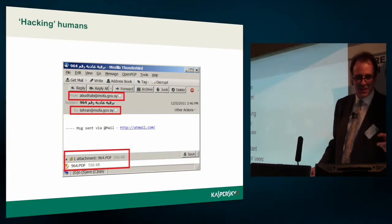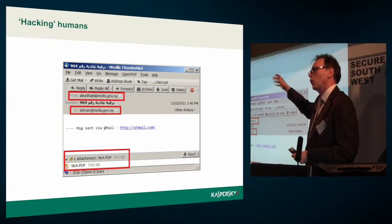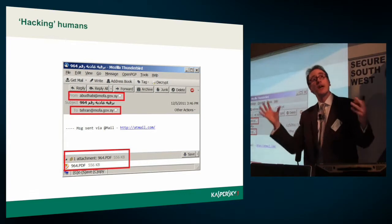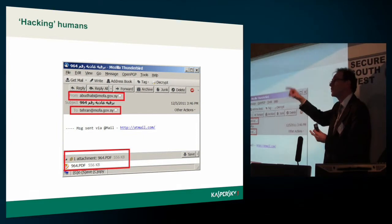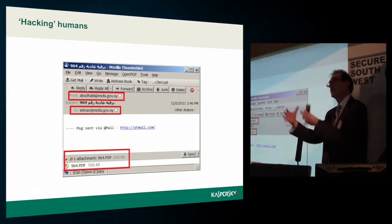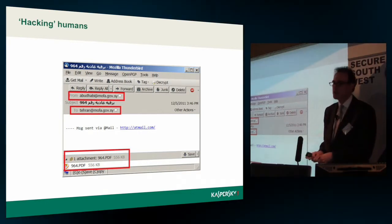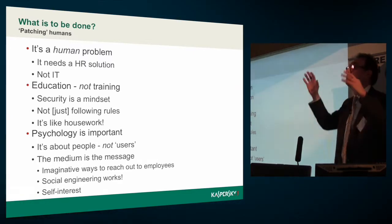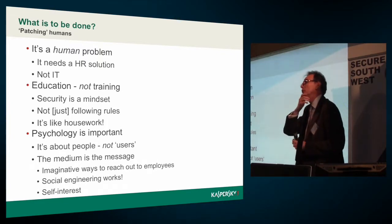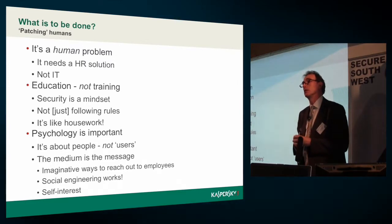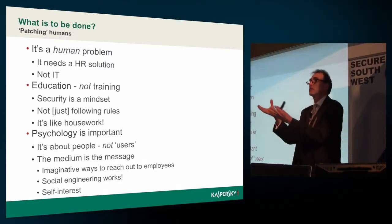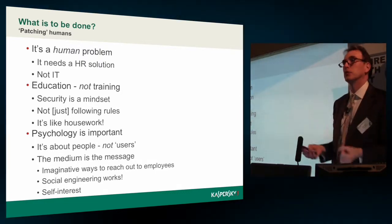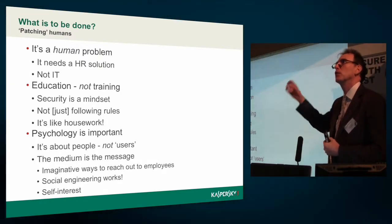My main point is that if we as humans and the people we work with are part of the problem, we have to be part of the solution. As organizations, we need to find creative ways to patch humans, just as we seek to patch our digital resources. Too often we don't. It's a human problem — maybe it needs an HR solution, because they're the human experts. But in lots of organizations, the people who get the job of communicating with staff are techies. That's obvious because techies know technology. But often, techies aren't professional communicators.